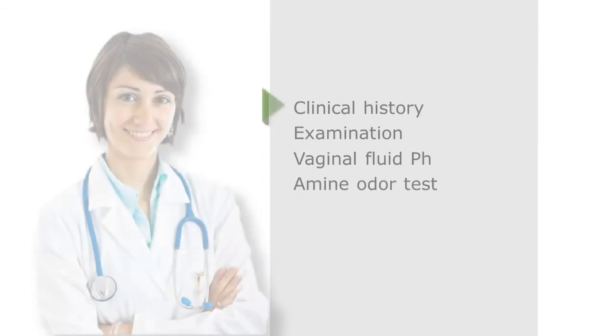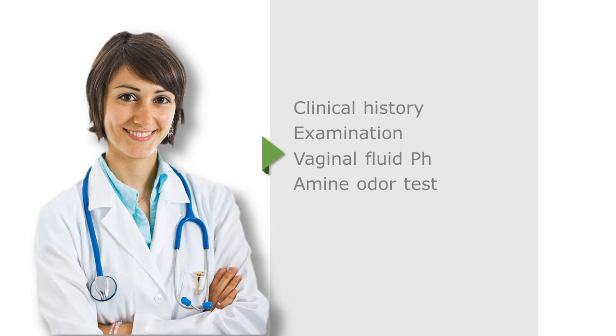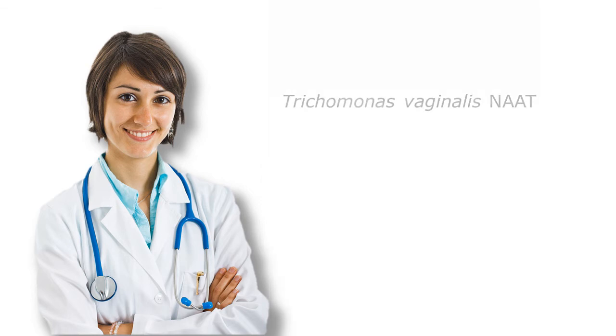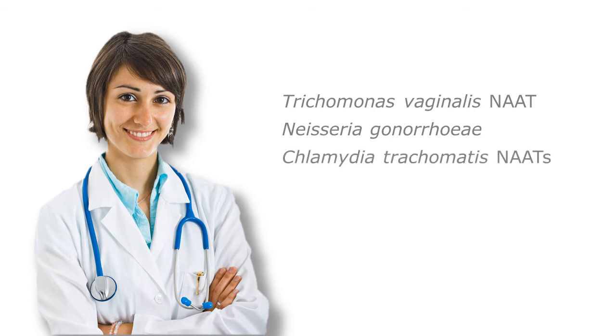Based on the clinical history, examination, vaginal fluid pH, and amine odor test, you suspect trichomoniasis despite the negative wet prep, and you send a vaginal swab for trichomonas vaginalis NAT. Given Anna's sexual history, you send another vaginal swab for Neisseria gonorrhoeae and Chlamydia trachomatis NATs. You also order serologies for syphilis and HIV.